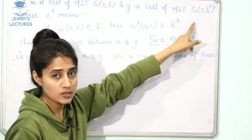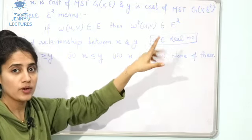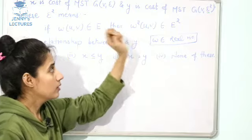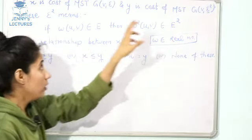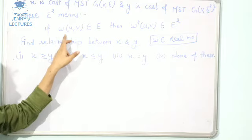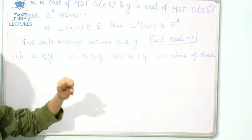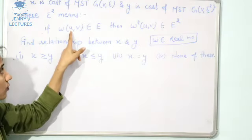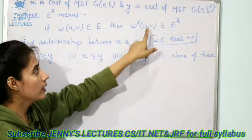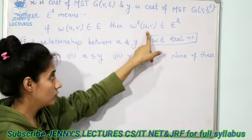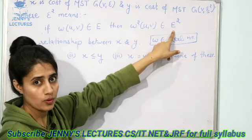The number of vertices are same in both MSTs, number of edges obviously would be same. Then E would be E square. Now what E square means: if weight w(u,v) belongs to E, then w²(u,v) of that edge belongs to E².